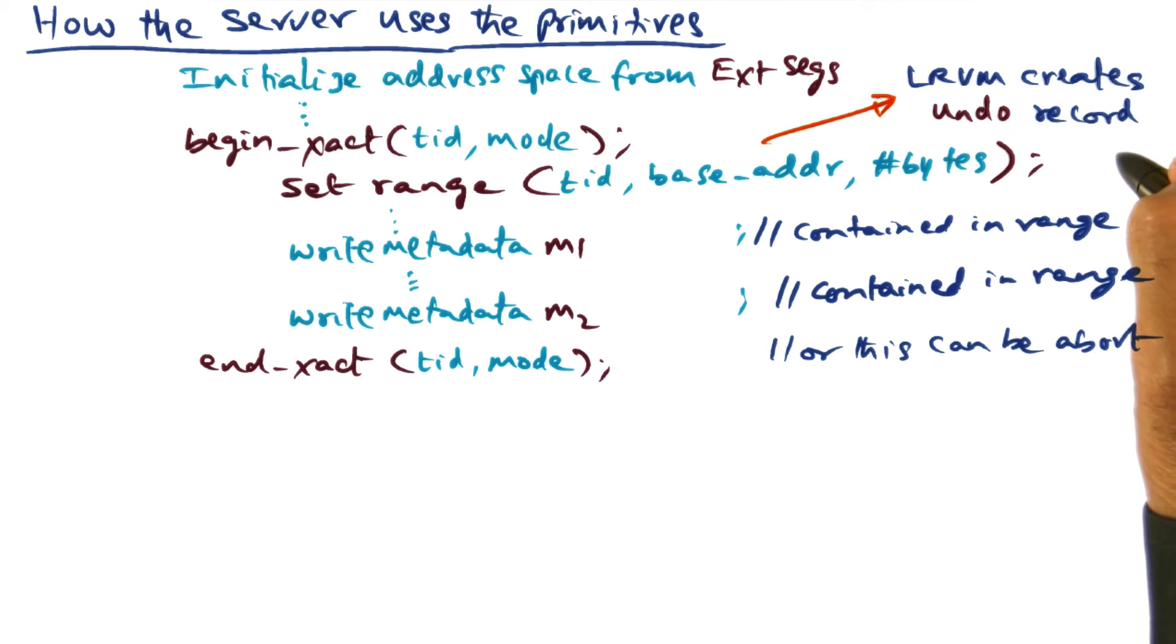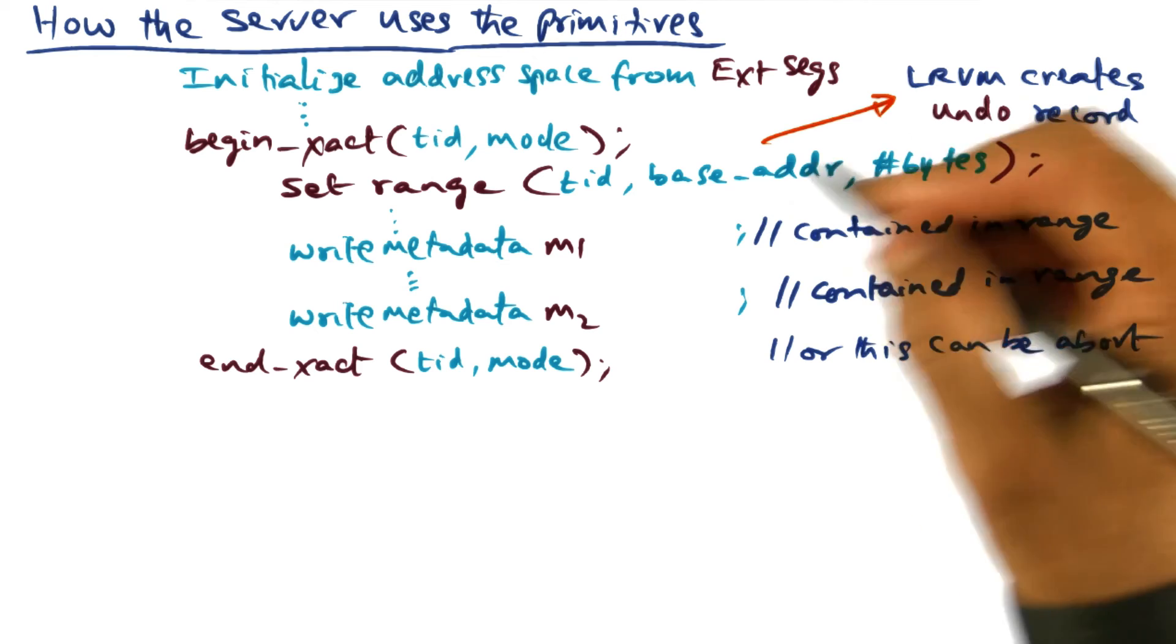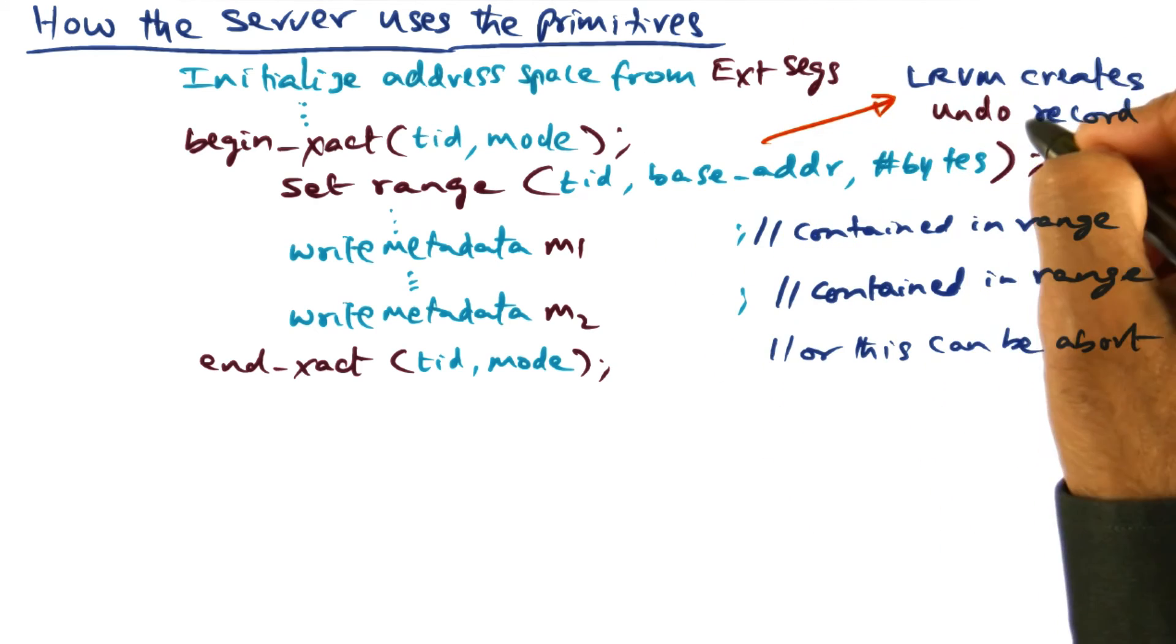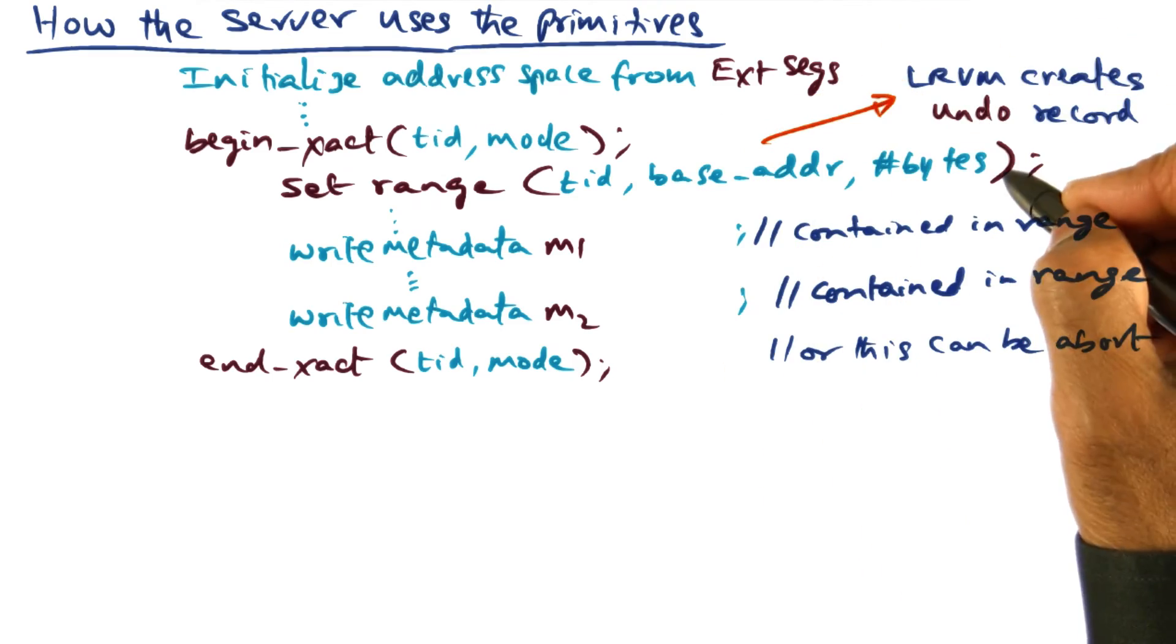This undo record is meaningful only if the transaction aborts because in that case, what LRVM would do is restore the original version of this portion of the virtual address space by copying the undo record back into that space.